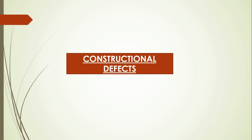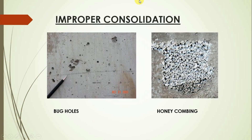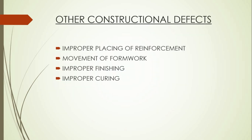Now let us look at deterioration through constructional defects. The first is improper consolidation. Consolidation is a process of removing entrapped air from freshly prepared concrete; vibrators are used for this purpose. However, if the entrapped air is not removed properly, it leaves holes in the concrete, and bug holes and honeycombs are formed in the structure.